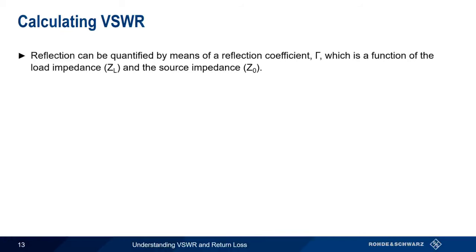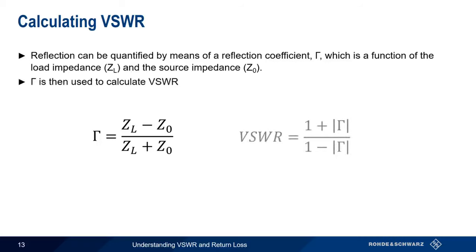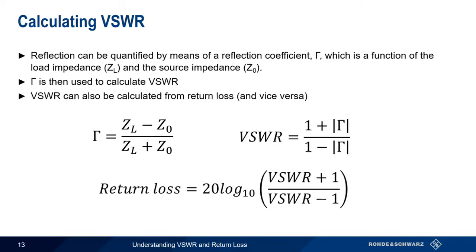Mathematically, we calculate VSWR by determining the reflection coefficient gamma, which is a function of the load impedance Z_L and the source impedance Z_0. These impedances are complex, frequency-dependent values. Once we have gamma, VSWR is calculated by plugging gamma into another simple equation. We can also easily convert between VSWR and return loss.